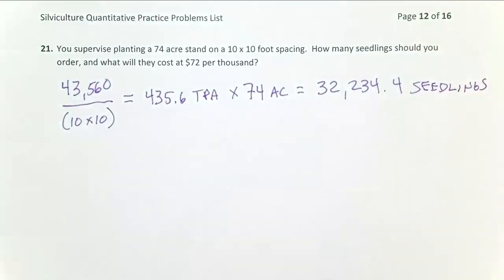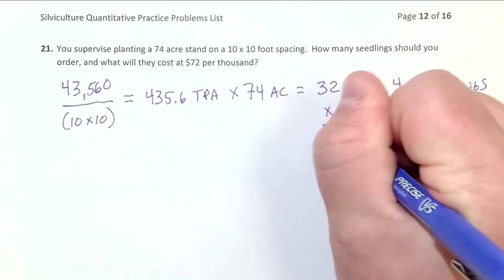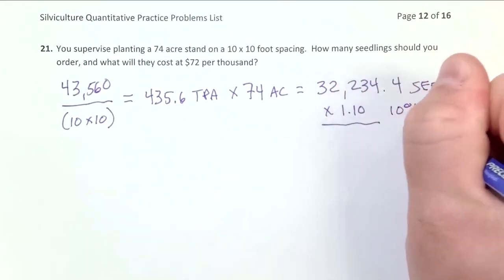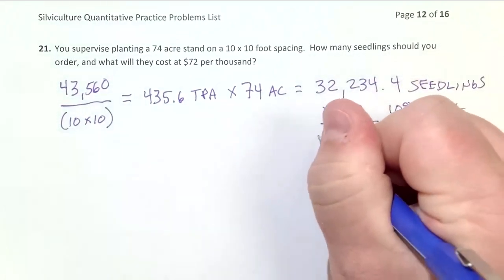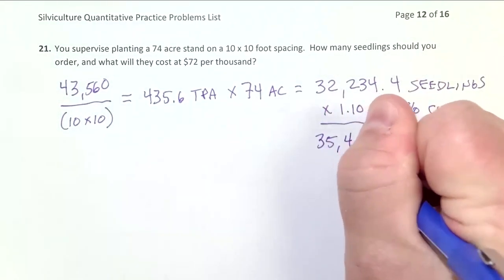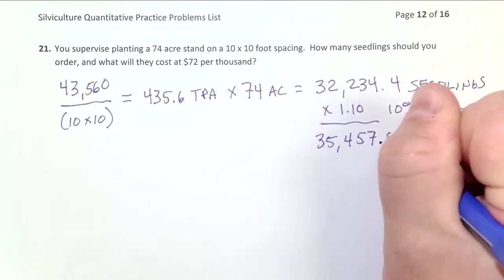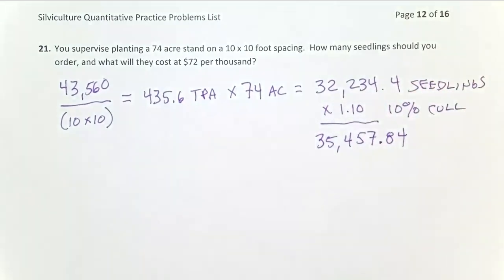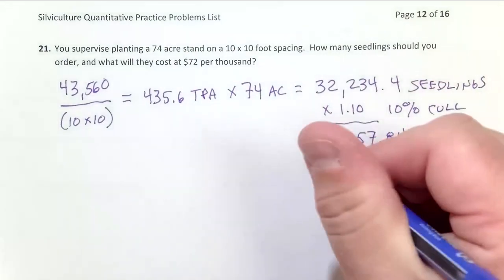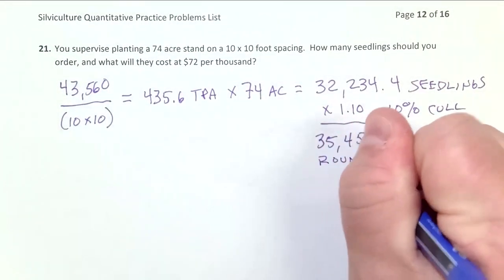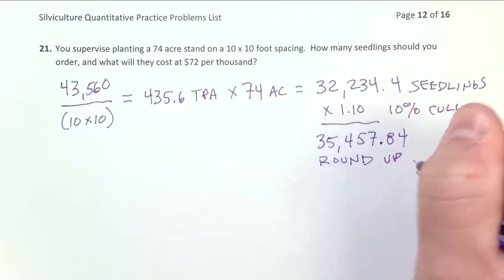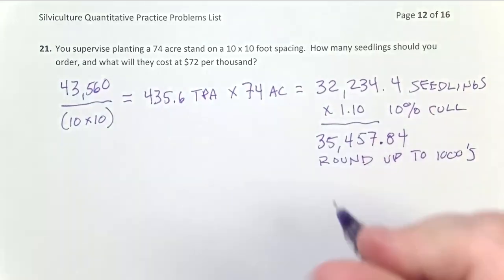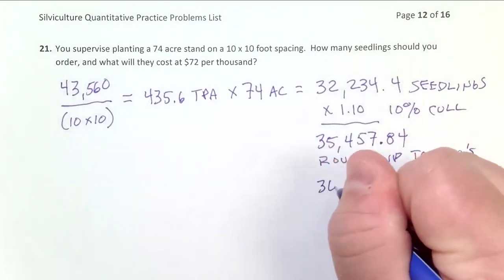But then remember, we have two further steps to do. We need to multiply this number by 1.10. That's our 10% cull. And that gives us 35,457.84. But then we have one more step. We round up. The seedlings are sold by 1,000. Thousands. And so that gives us round to 35,000 something up. That gives us 36,000 seedlings.